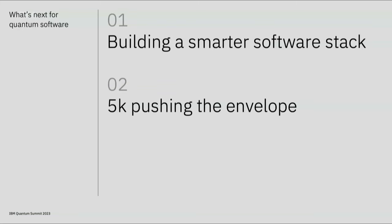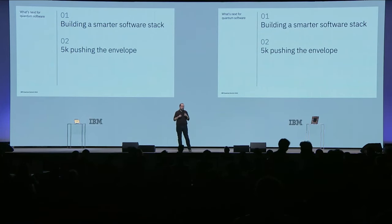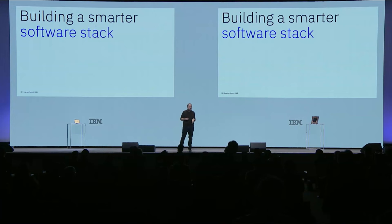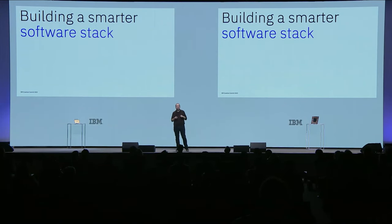Let me divide this session into parts. In the first part, we are going to explore how to use AI and automation tools to build this smart software stack. In the second part, we are going to talk about how we are going to run 5,000 gate circuits in our quantum systems. Let's start with a look at how we are going to combine quantum and AI.